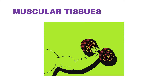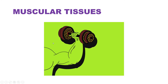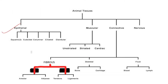In the last video we studied about epithelium tissues, their divisions, and how many types there are. Now we are going to study about muscular animal tissues, which are subdivided into three parts.